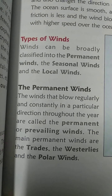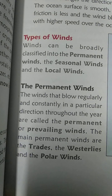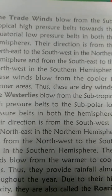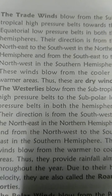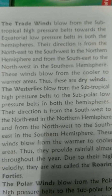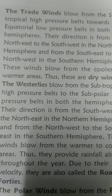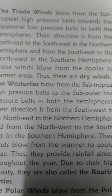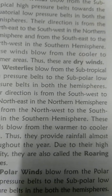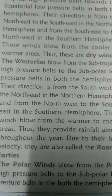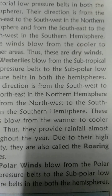The main permanent winds are trade winds, westerlies, and polar winds. Trade winds blow from subtropical high pressure zones towards the equatorial low pressure zone in both the northern and southern hemispheres. Their direction is from the northeast to the southwest in the northern hemisphere and from the southeast to the northwest in the southern hemisphere. These winds blow from cooler areas to warmer areas, and thus they are dry winds.